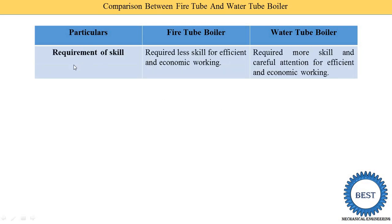Next point is requirement of skill. Fire tube boiler requires less skill for efficient and economic working — meaning for operating the fire tube boiler less skill is needed. In a water tube boiler, more skill and careful attention are required for efficient and economic working. A high-skill worker is required for a water tube boiler, and a less-skilled operator is required for a fire tube boiler.